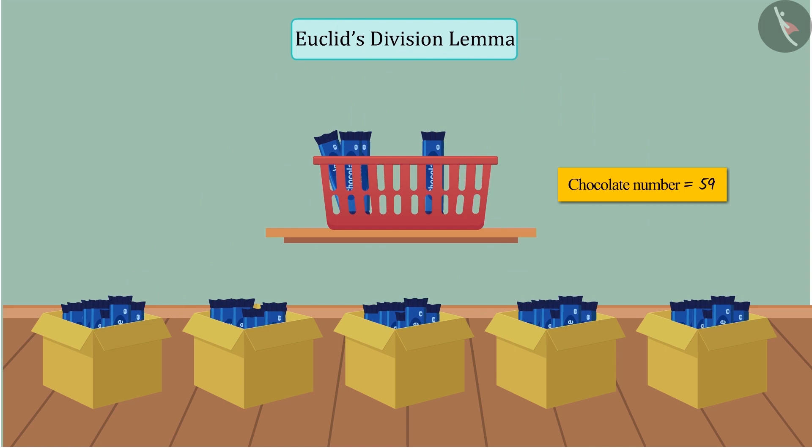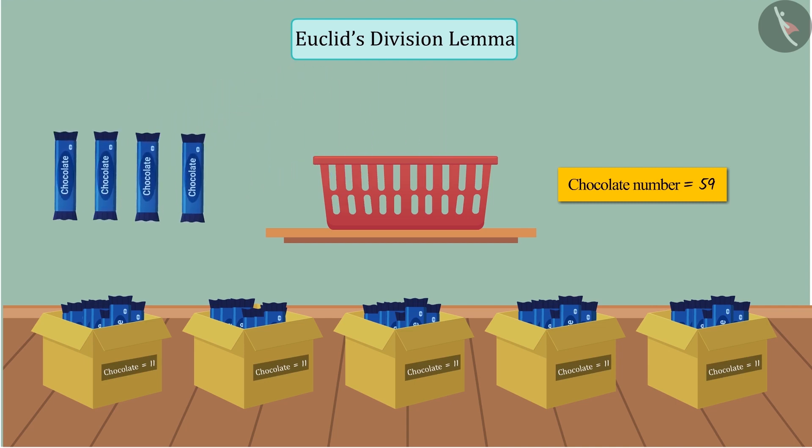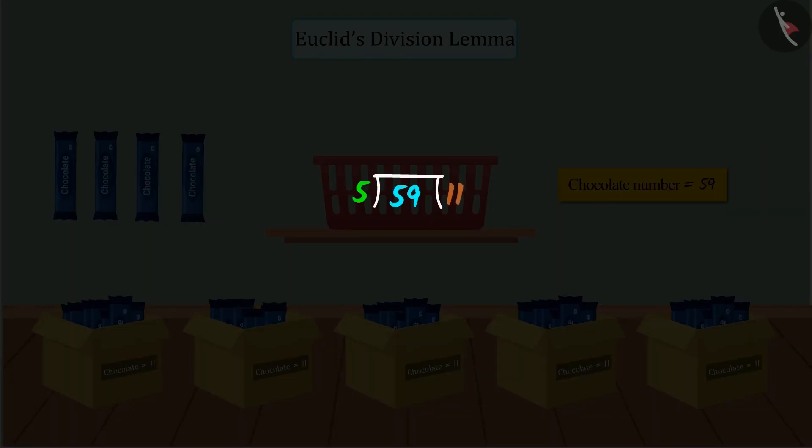Now, we have 11 chocolates in each box, while 4 chocolates still remain, which we represent in this way.